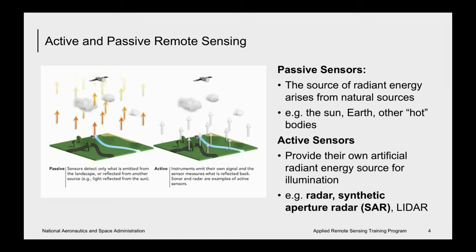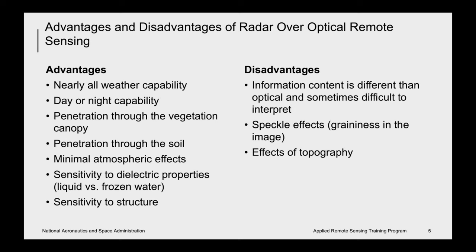The advantages of radar over optical remote sensing include the ability to observe the surface day or night and under almost all weather conditions, since optical images are hindered by clouds or darkness. The radar signal can also penetrate through a medium — meaning vegetation canopy, snowpack, or soil — whereas optical only sees the very top. Additionally, radar requires minimal to no atmospheric corrections, as opposed to optical where atmospheric corrections are critical. Radar is also very sensitive to the dielectric or electrical properties of the surface, and to structure — those are the two key things radar is sensitive to.